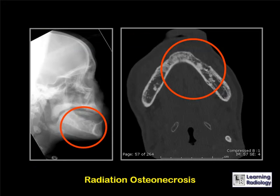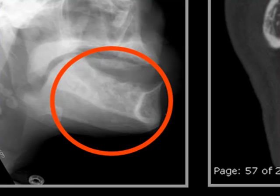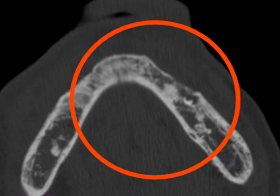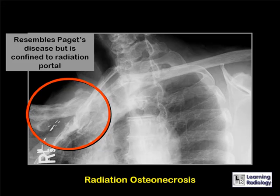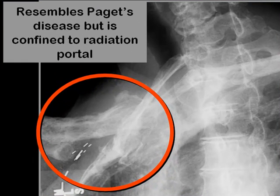This is an example of radiation osteonecrosis of the mandible. Inside the red circle, a portion of the body of the mandible is osteopenic and a portion of the alveolar ridge is destroyed. On CT, the cortex in the area of radiation osteonecrosis is not as thick as normal cortex. Another example shows radiation osteonecrosis of the clavicle in a patient irradiated for breast carcinoma, with a somewhat thickened cortex and coarsening of the trabecular pattern — resembling Paget's disease, but confined to the radiation portal.